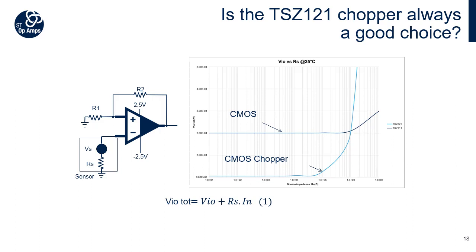If these op-amps are used to interface a sensor with source impedance RS, the resulting offset is given by equation 1. Although the offset performance of a chopper op-amp is better than the competition across a wide range of impedances, its offset performance starts to degrade rapidly when the source impedance RS exceeds a threshold given by equation 2. We can clearly see that if the sensor used has an impedance higher than 1 MΩ, it is better to choose the TSV711 rather than the TSZ121.